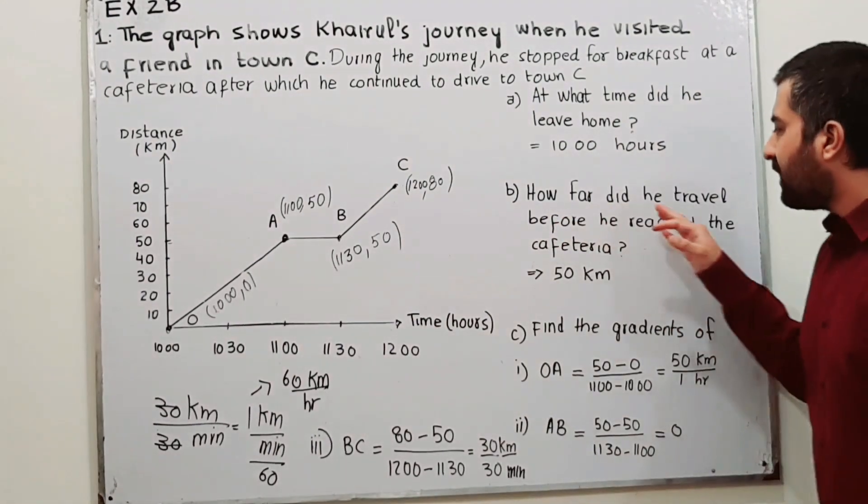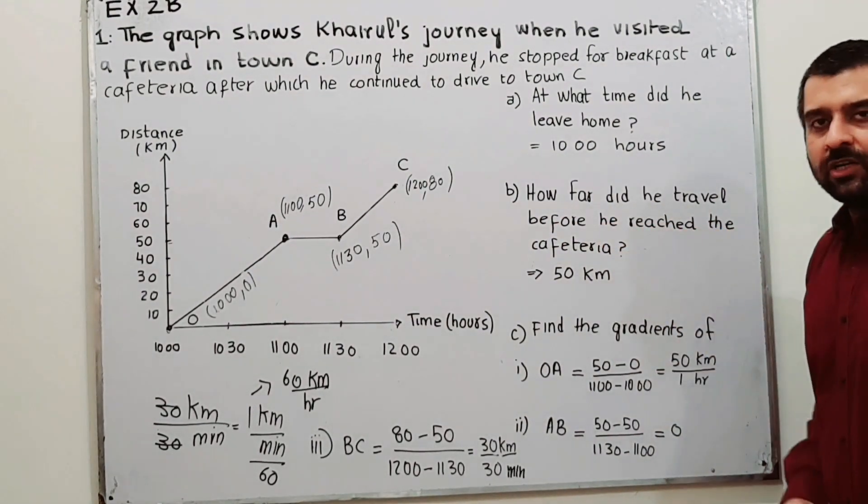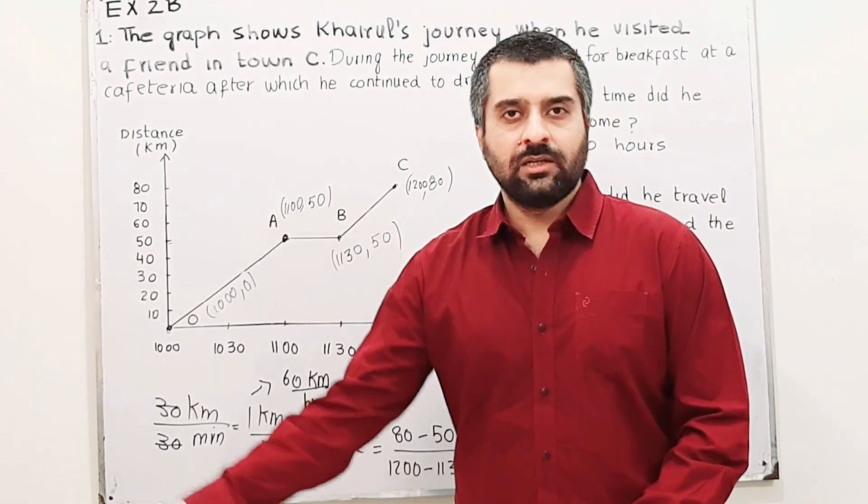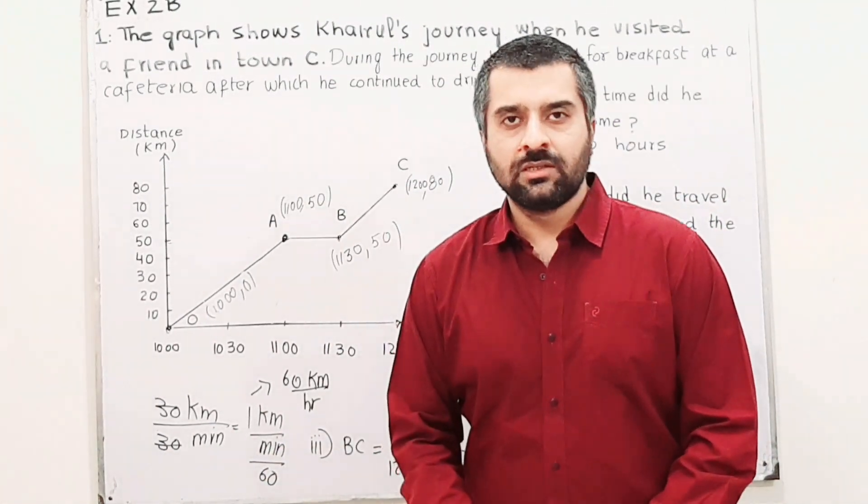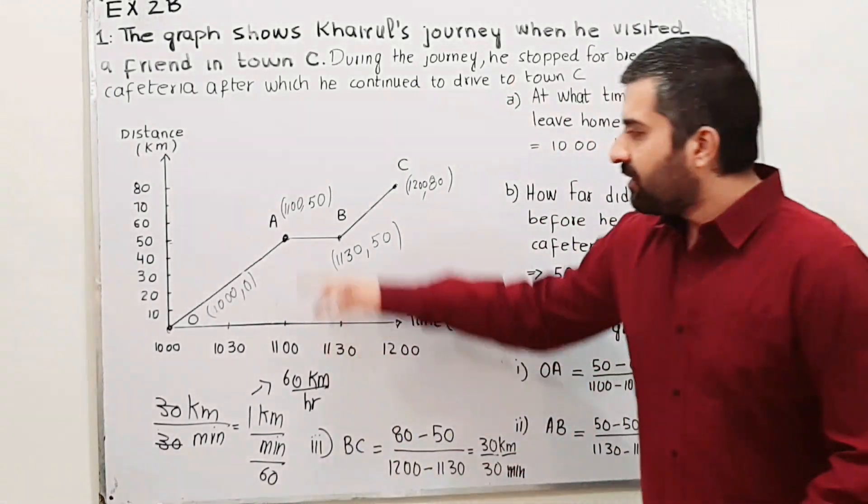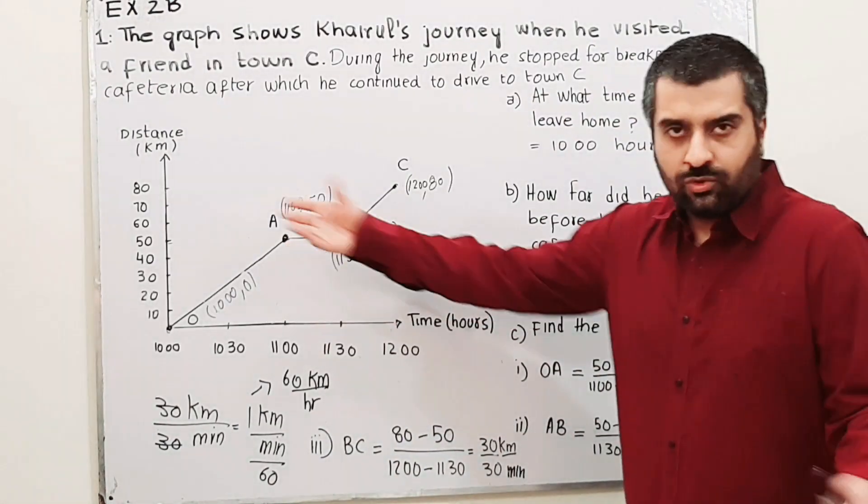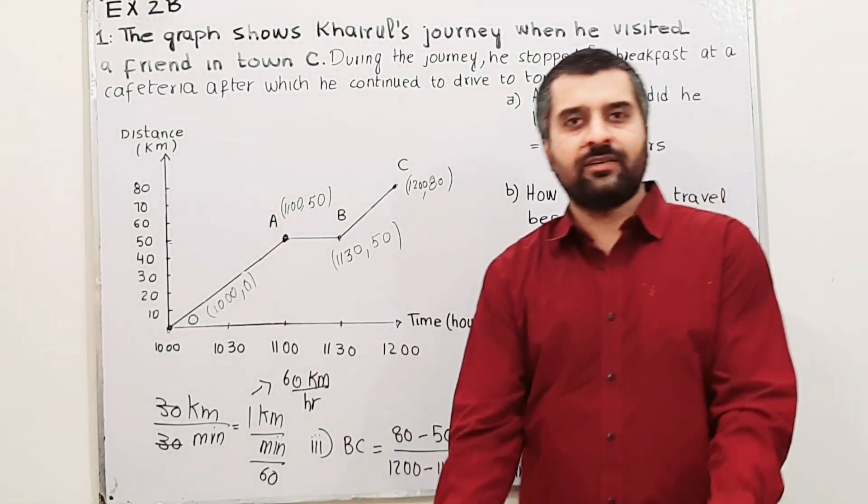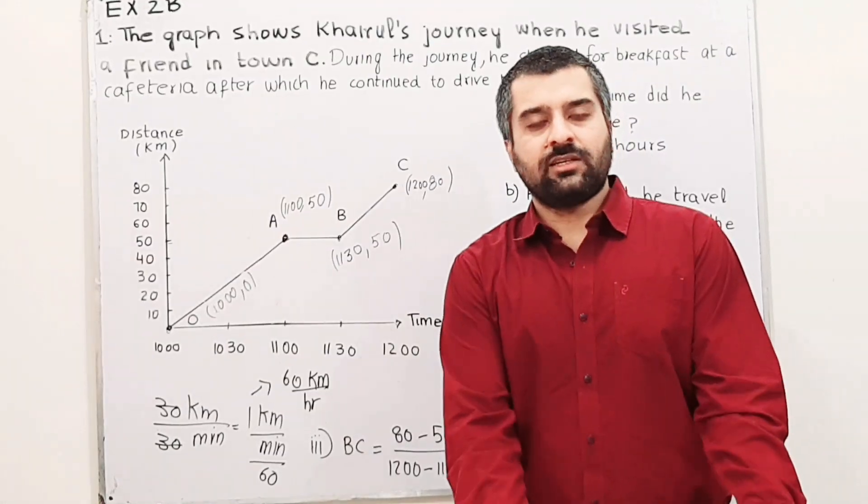Part B is: how far did he travel before he reached the cafeteria? The word is 'how far', which means they want distance. When he reached the cafeteria, how do we know he is at cafeteria? Because he is at rest.